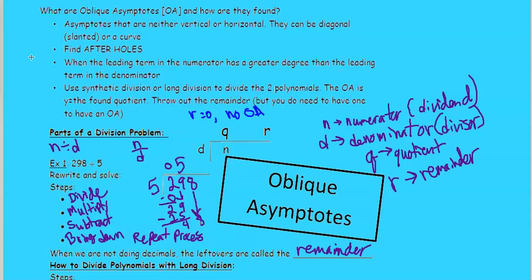5 goes into 48, 9 times. 9 times 5 is 45. Subtract those. And then you get 3. So your remainder is 3.